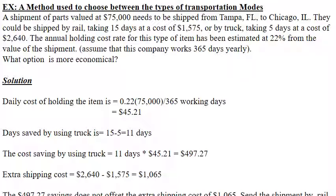The trade-off comparison: the cost saving by using truck ($497.27) does not offset the extra shipping cost ($1,065) of using the truck. Therefore, it is more economical to recommend using rail as the transportation mode for this shipment.